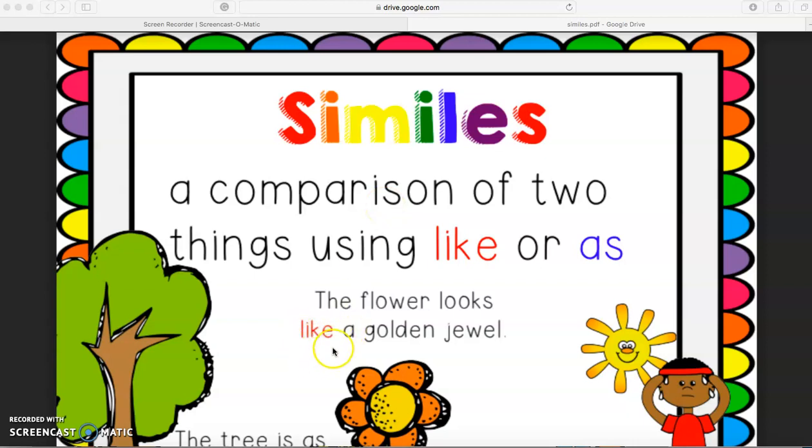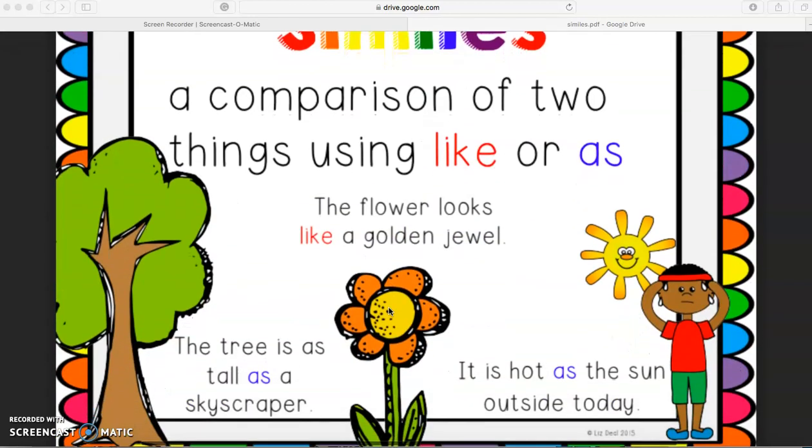So here we have an example: the flower looks like a golden jewel. The tree is as tall as a skyscraper. It's hot as the sun outside today.